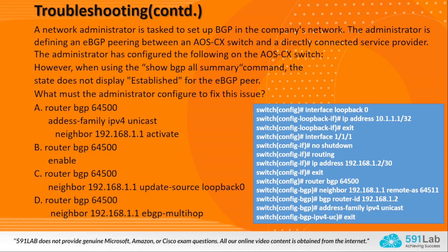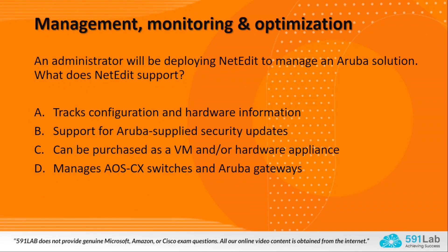Option C suggests update-source loopback — since the neighbor IP and router interface are in a /30 subnet they are point-to-point; update-source is useful in iBGP scenarios but not here, so it is incorrect. Option D — eBGP multi-hop — is useful when iBGP neighbors are reachable through intermediate routers or when using loopback IPs, but it is not required here as they are directly connected via /30 subnet. The correct answer is Option A.